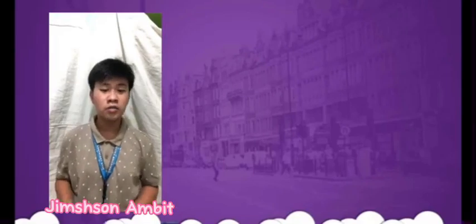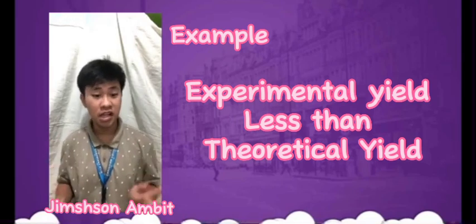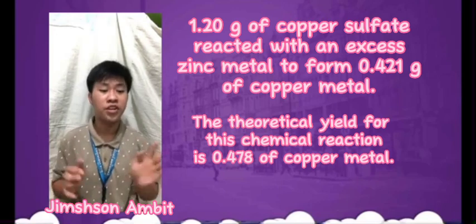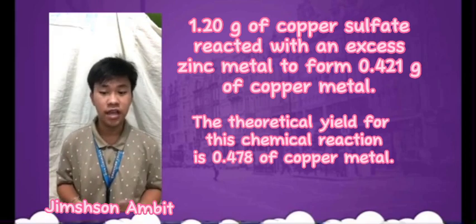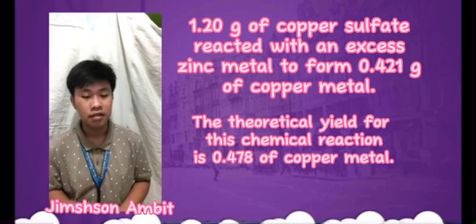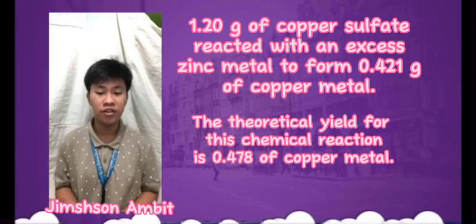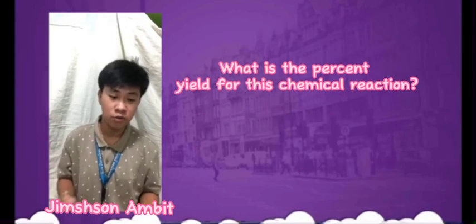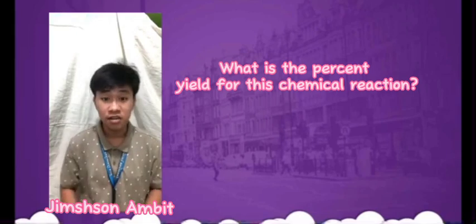How do you calculate the percentage yield of a chemical reaction? Here is an example where the experimental yield is less than the theoretical yield. We have 1.20 grams of copper sulfate that reacts with an excess of zinc metal to form 0.421 grams of copper metal. The theoretical yield for this chemical reaction is 0.478 grams of copper metal. The question is: what is the percentage yield for this chemical reaction?